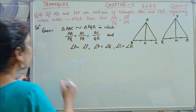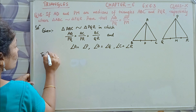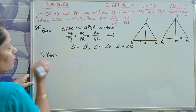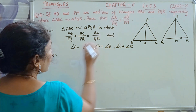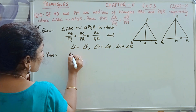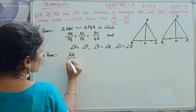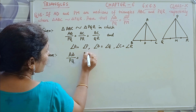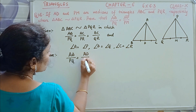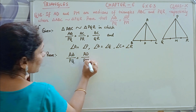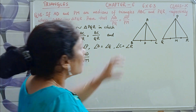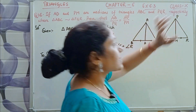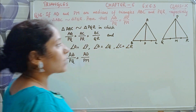Now let's write what we need to prove. We have to prove that AB proportionate to PQ is equal to AD proportionate to PM — that is, AB/PQ = AD/PM.